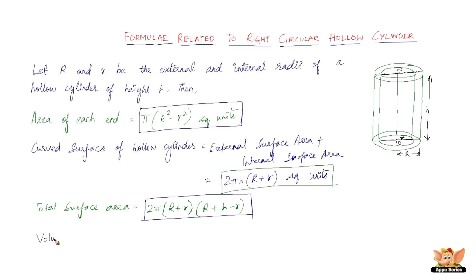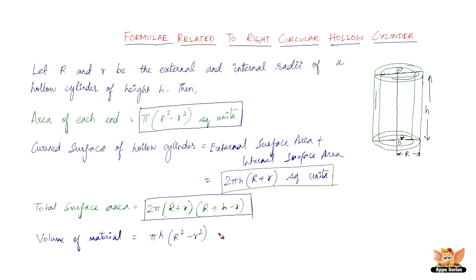And finally, we've got the volume. The volume is nothing but the external volume minus the internal volume. When we talk about the volume of a right circular hollow cylinder, it's the volume of the material — between the two cylinders. So the volume of the material is nothing but the volume of the outer cylinder minus the volume of the inner cylinder, which is π times h times (capital R squared minus small r squared) cubic units.